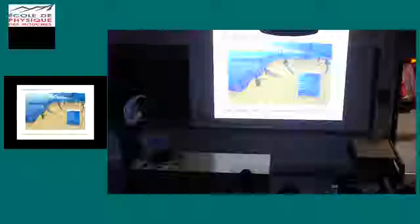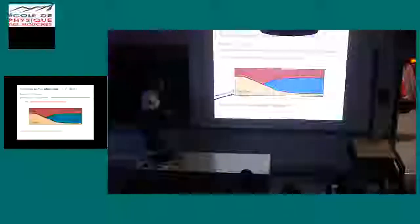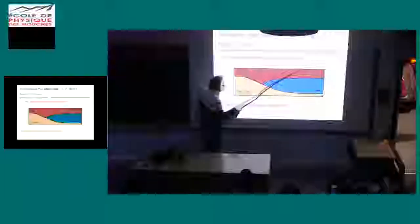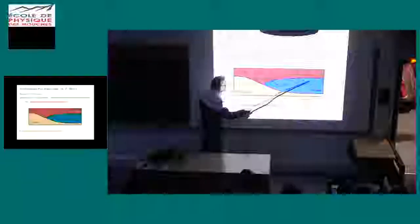We'll look at this in a very simplified fashion. We have a river flowing into the ocean — fresh water and sediment — which together is usually lighter than the salt water of the ocean. As a result, this plume propagates along the top of the ocean. In a simplified setup, we have fresh water and sediment situated above salt water, and we want to understand how the sediment now settles out of the fresh water into the salt water and down to the sea floor.